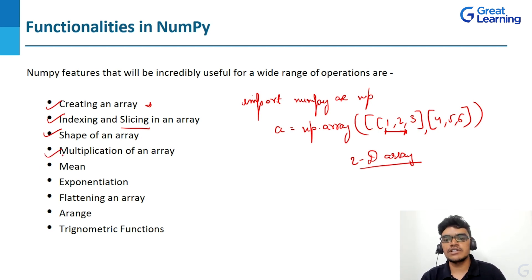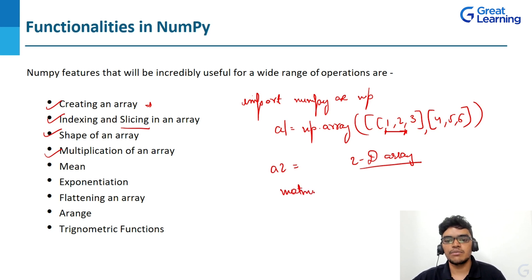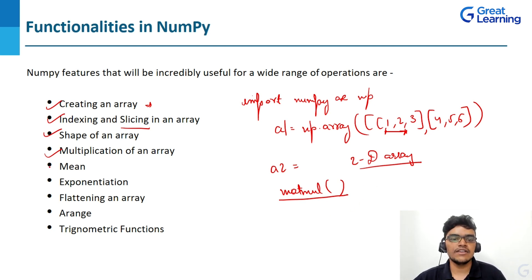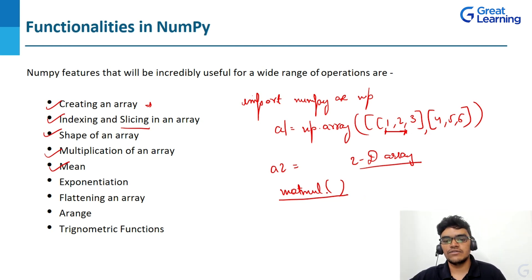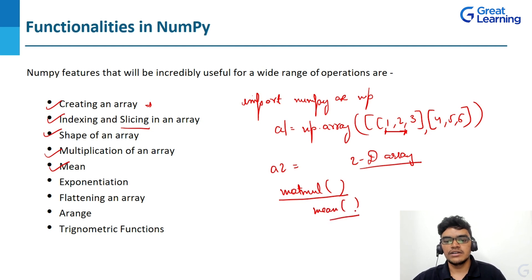Using NumPy you can create one array and even another array a2, then use the matrix multiplication function np.matmul to multiply two arrays. Next, we have the mean function in NumPy. Using the mean function, you can calculate the mean — the sum of all numbers divided by the total count. For example, if you have four numbers, it would be (1 + 2 + 3 + 4) / 4.